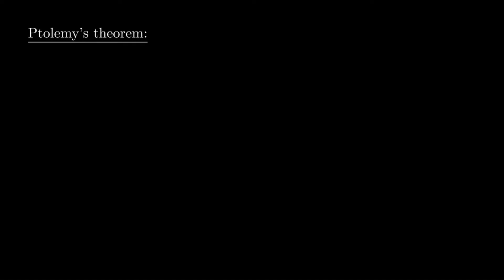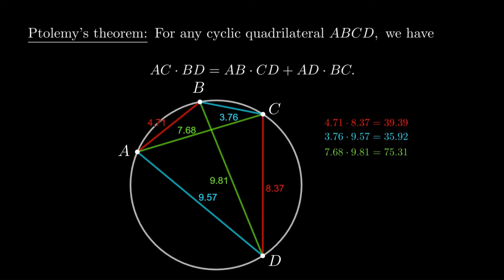Ptolemy's theorem is a classical result in geometry that says that if we take any cyclic quadrilateral, ABCD, meaning a quadrilateral that can be inscribed in a circle, then the product of the diagonals is the sum of the products we get from multiplying opposite sides.